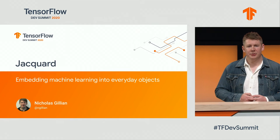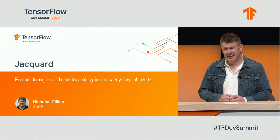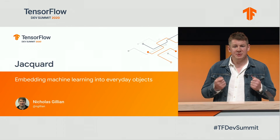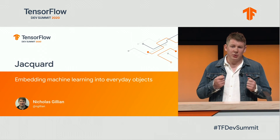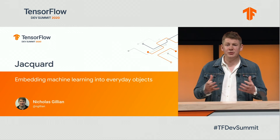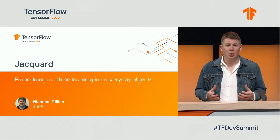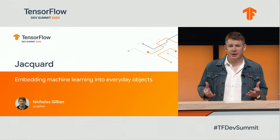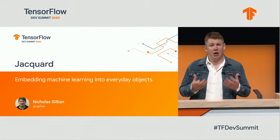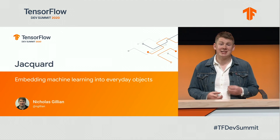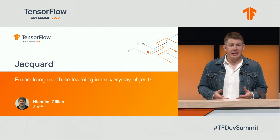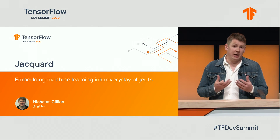We've just heard from the TensorFlow Lite team about how it's getting even easier to place machine learning directly on devices. I'm sure this got many of you thinking: what's possible here? Now I'm going to tell you about how we're using Jacquard to do exactly this — embed machine learning directly into everyday objects.